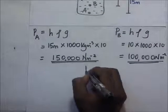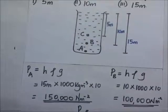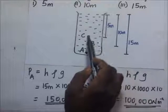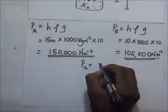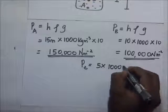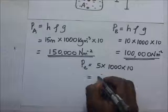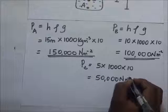And then also pressure at point C. We know that point C is five meters from the top, so it's going to be five, height times density, which is 1000, times gravity, which is 10. And we shall end up with 50,000 Newtons per meter squared.